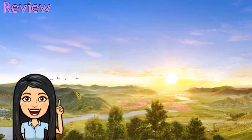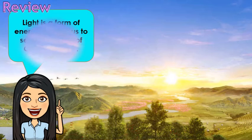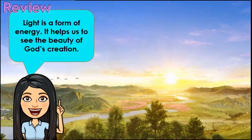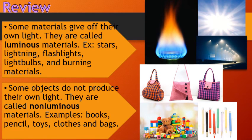In our previous lesson, we learned that light is a form of energy. It helps us to see the beauty of God's creation. The sun is the earth's primary source of heat and light. Without the sun, no life can exist. The sun keeps us warm and lets us see in the dark. We also tackled luminous and non-luminous materials. Materials that give off their own light are called luminous materials. Examples of these are stars, flashlights, light bulbs, and burning materials.